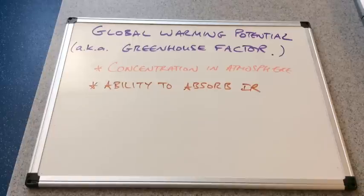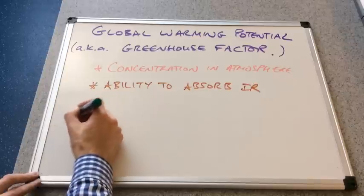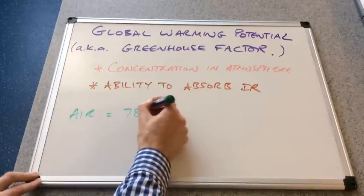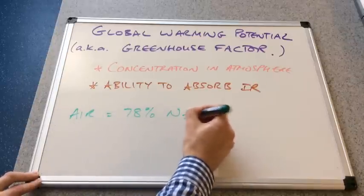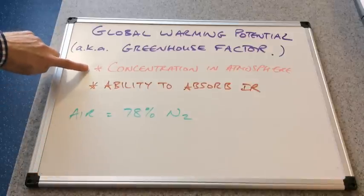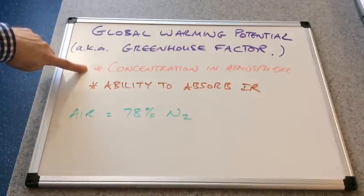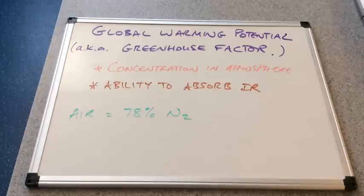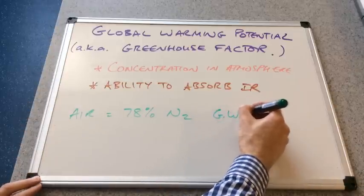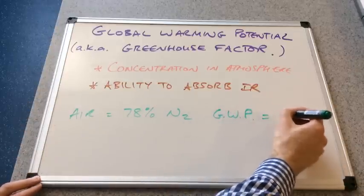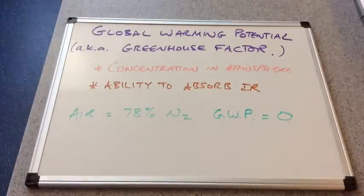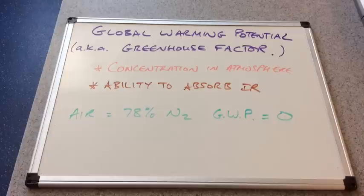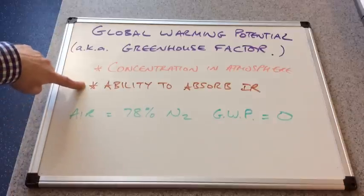So if we look at a couple of examples now. If we take the air, the air is 78 percent nitrogen. So it's got a very very high concentration in the atmosphere here but its global warming potential is zero. So what that means is nitrogen doesn't cause the greenhouse effect. So what that's telling us is it obviously can't or it doesn't absorb infrared.